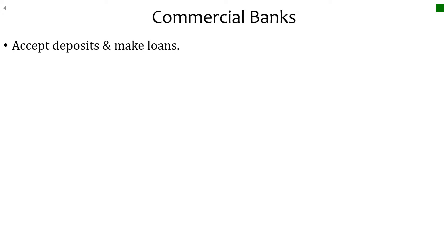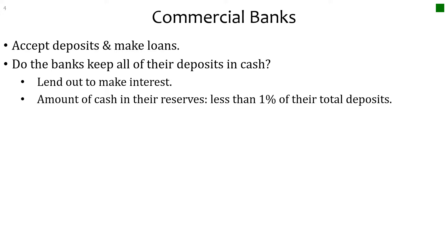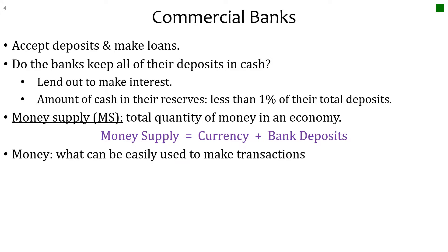Commercial banks accept deposits and make loans — you can have checking accounts, savings accounts, or borrow money from them. Banks don't keep all deposits in cash; they lend most of it out because lending is their main source of income. The amount of cash held in reserves is less than 1% of total deposits. Money supply is the total quantity of money in an economy: all currency plus bank deposits, including checking and savings accounts. Money is not the same as cash.